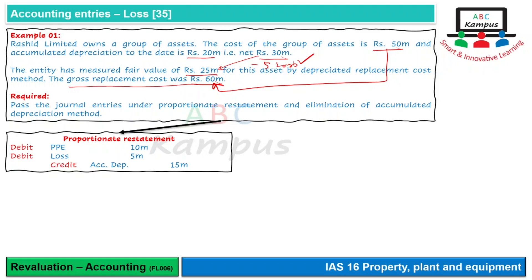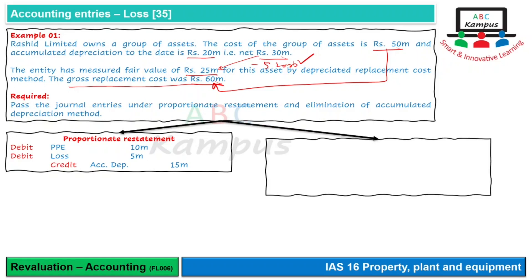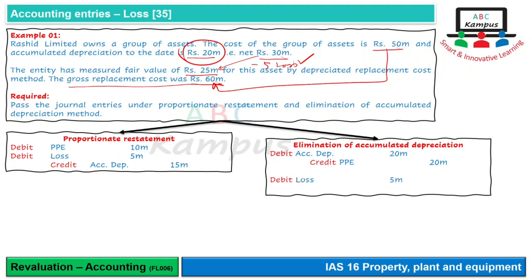Elimination of accumulated depreciation method में step one: 20 million की accumulated depreciation को eliminate कर देंगे - accumulated depreciation debit, asset credit। Step two: 5 million का loss record करेंगे - loss debit, asset credit।